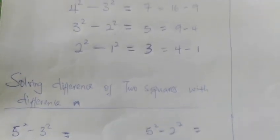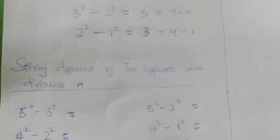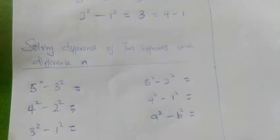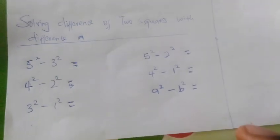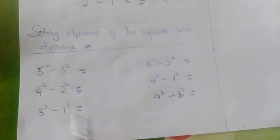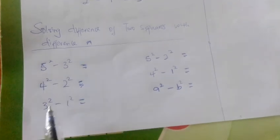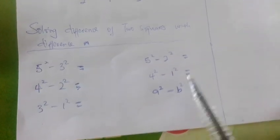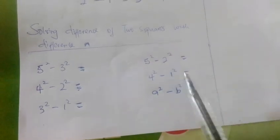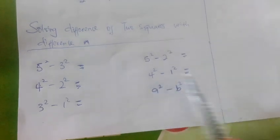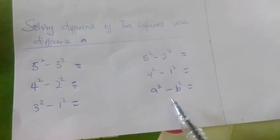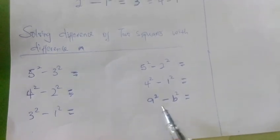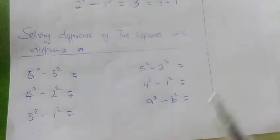In today's video we'll be looking at solving difference of two squares with variable n. For the first question, we have 5 squared minus 3 squared, 4 squared minus 2 squared, 3 squared minus 1 squared. The second part, we have 5 squared minus 2 squared and 4 squared minus 1 squared. Finally, we have a squared minus b squared.